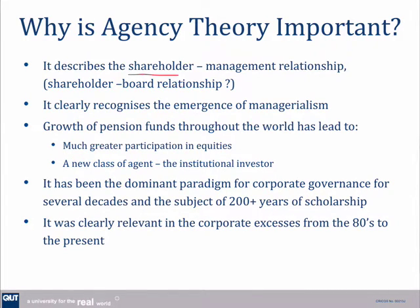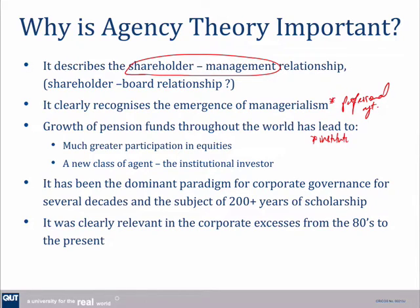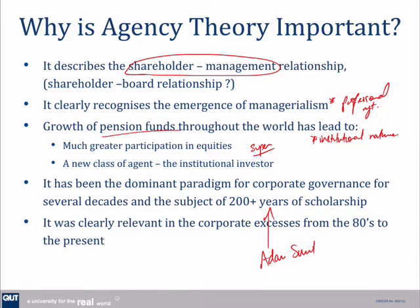Agency theory describes the shareholder-management relationship, and some could argue the shareholder-board relationship. It really has been a response to the rise of professional management, investment, and the increasing institutional nature of investment — the institutionalization of our financial system through pension funds, or super as we would call it in Australia. This has dominated corporate governance research. Even Adam Smith wrote about this some 200 years ago, so it's a core driving idea behind why we have boards and why we have corporate governance.